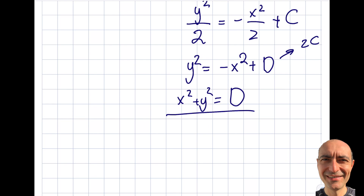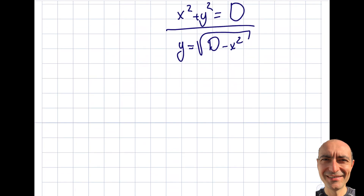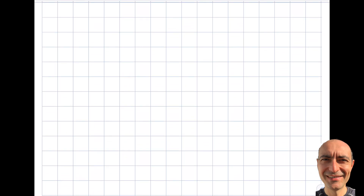From the implicit solution x² + y² = d, I can also extract an explicit solution: y = √(d − x²). So I can solve these. Now let's go solve a question that's a little more demanding, but the fundamental idea is the same. I don't have a lot to cover conceptually in this segment — it's mainly about solving questions and illustrating how this is accomplished.